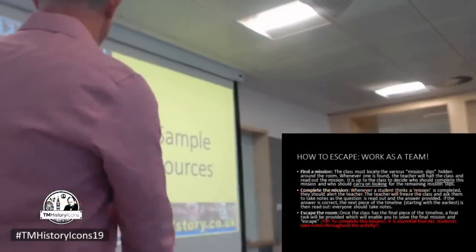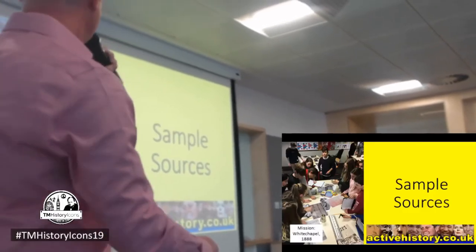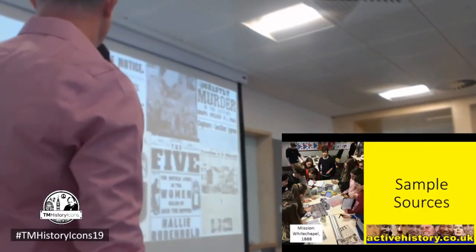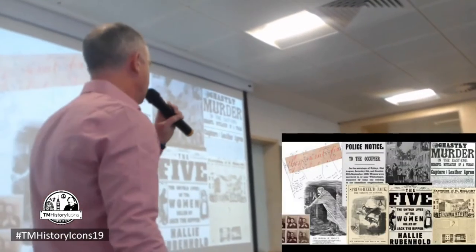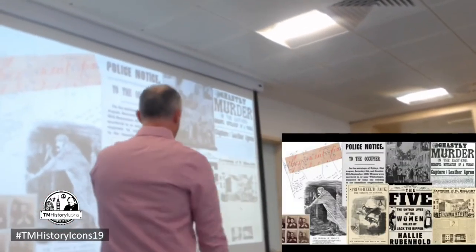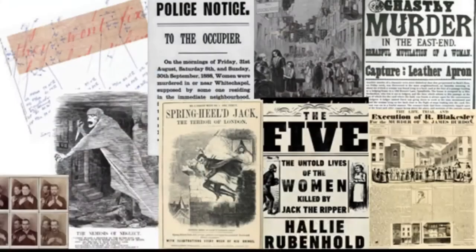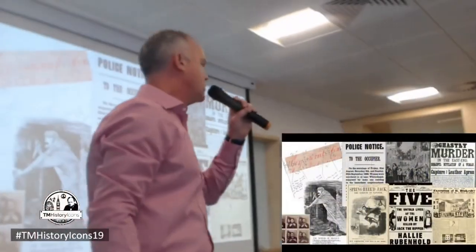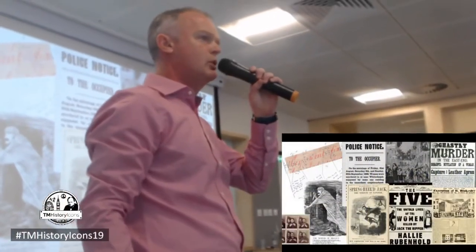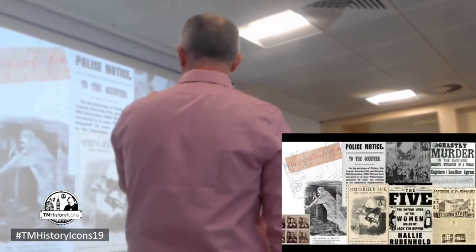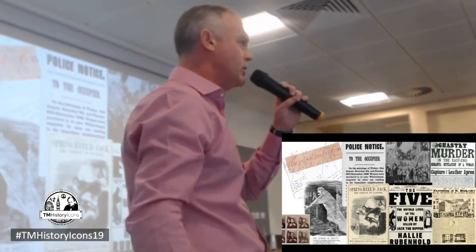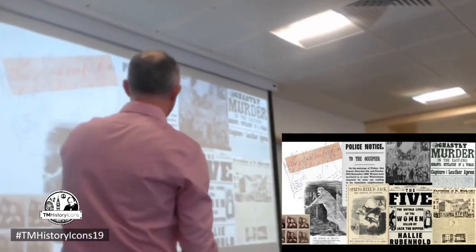Here are some sample sources — this one is the Whitechapel one I just outlined. You can see the sort of things we mean: nothing difficult to get hold of, just images you found on the web. If you're not familiar with this book — The Five: Untold Stories of the Women Killed by Jack the Ripper, which was recently published — it's absolutely superb. It's really focusing very heavily just on the social conditions and the lives of those women and the conditions they experienced rather than on the murders themselves.